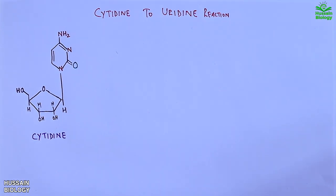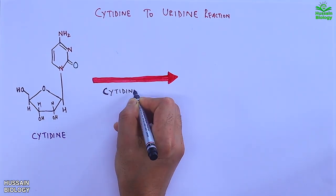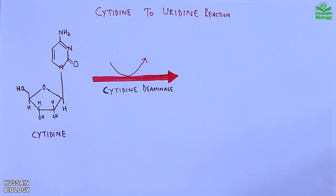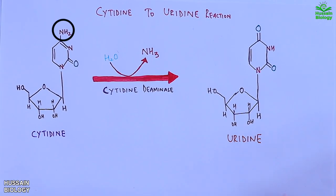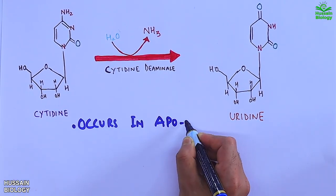Moving on, here the cytidine is acted upon by cytidine deaminase in presence of water and removes NH3, and from this reaction we get the uridine molecule. This kind of reaction occurs in apoB gene.